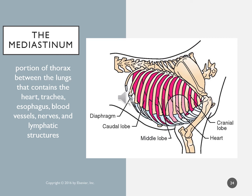The mediastinum is the portion of the thorax between the lungs, containing the heart, trachea, esophagus, blood vessels, nerves, and lymphatic structures. On a ventrodorsal or dorsoventral x-ray it appears as a small area above the heart. A pneumomediastinum occurs when air surrounds that area. The thymus in young animals can grow into a thymoma — the speaker's dog had a large benign thymoma visible in the mediastinum on x-ray.